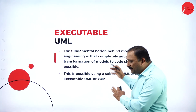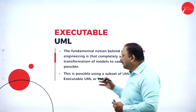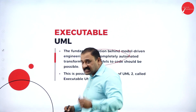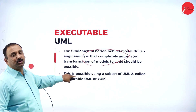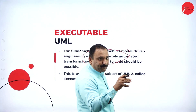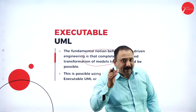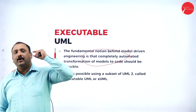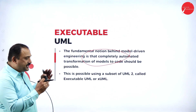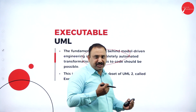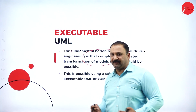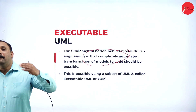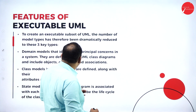Executable UML means the transformation is completely automated and the code can run by itself. This is achieved using a subset of UML2 called Executable UML. The aim of automation in a software project is to reduce manual intervention, focus on the output, and ensure the system can accommodate changes, adapt to requirements, and keep moving forward.